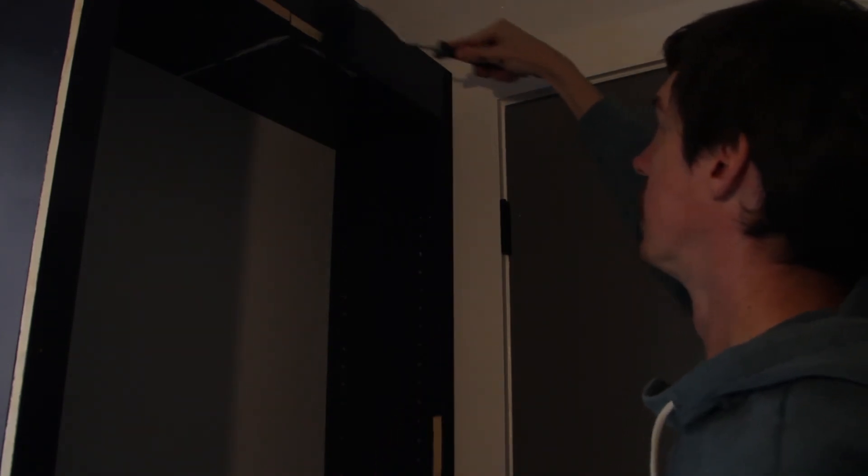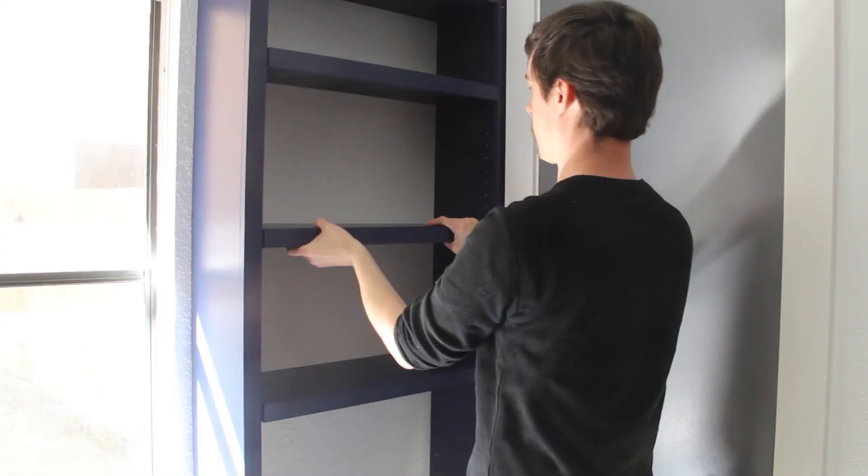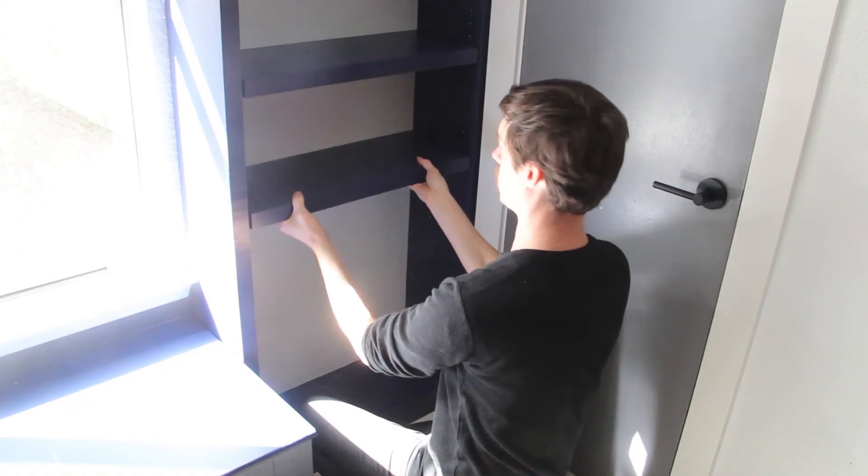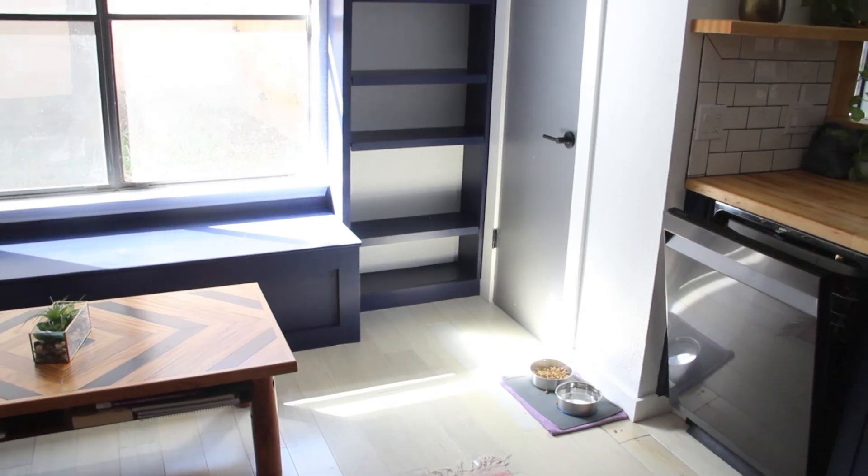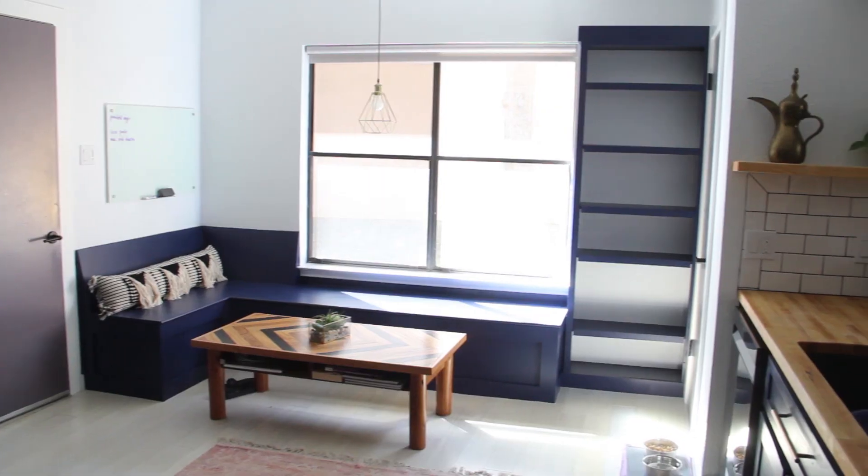Then I removed the shelves one last time to add the final touches of paint, and once everything dried I put the shelves back into place and that's it. I think this kitchen is finally done.